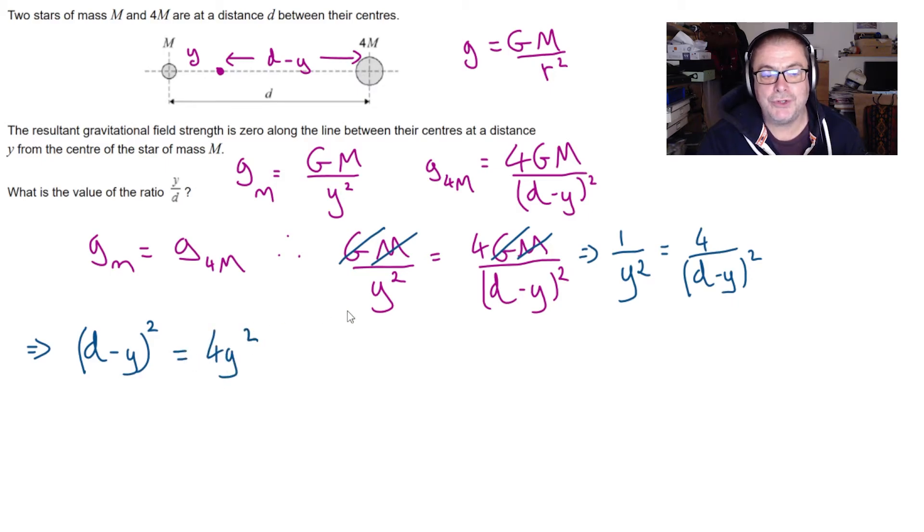What you do next depends on how much you love algebra. So perhaps your first option might be to expand the bracket d minus y all squared. In which case you get d squared plus y squared minus 2 dy equals 4 y squared. Now you can get to the solution from this point but it's going to take some algebra and possibly some going round and round for a while.